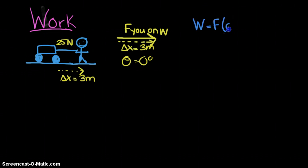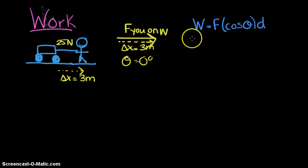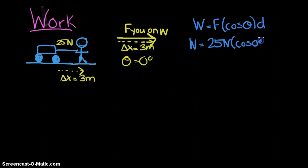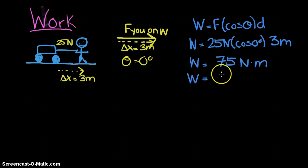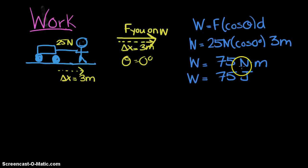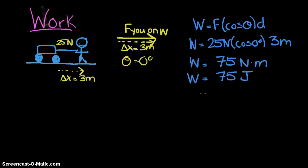Using the formula W = F·cosθ·d: 25 Newtons times cosine of 0° times 3 meters. Cosine of 0° is 1, so we get 25 × 1 × 3 = 75 Newton·meters. A Newton·meter is a special unit called a joule, named after James Joule, a famous physicist who investigated work and energy. We use capital J for joule.